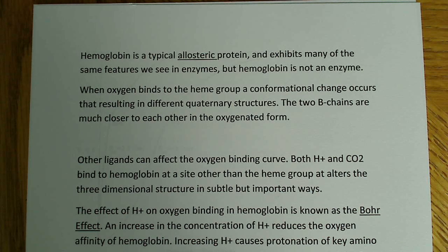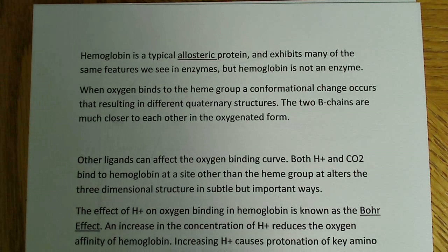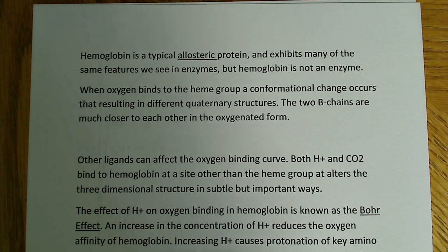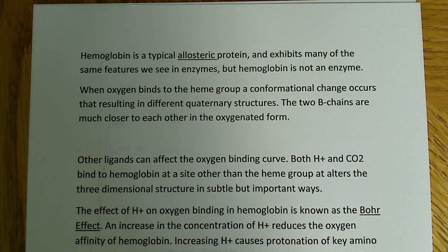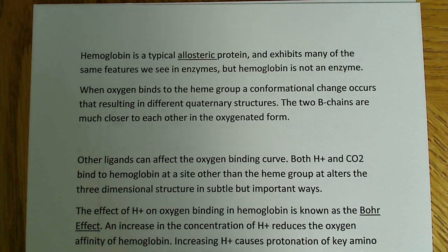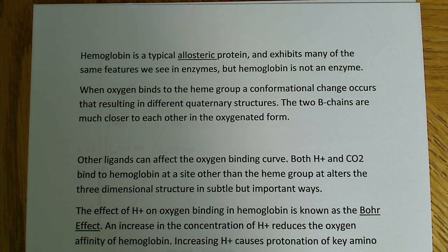What do I mean by an allosteric protein? When we talk about enzymes, an allosteric enzyme is capable of binding small molecules — small ligands — at a site other than the active site, and this causes some sort of conformational change in the enzyme, usually in the quaternary or tertiary structure. In the case of hemoglobin, it will be in the quaternary structure.